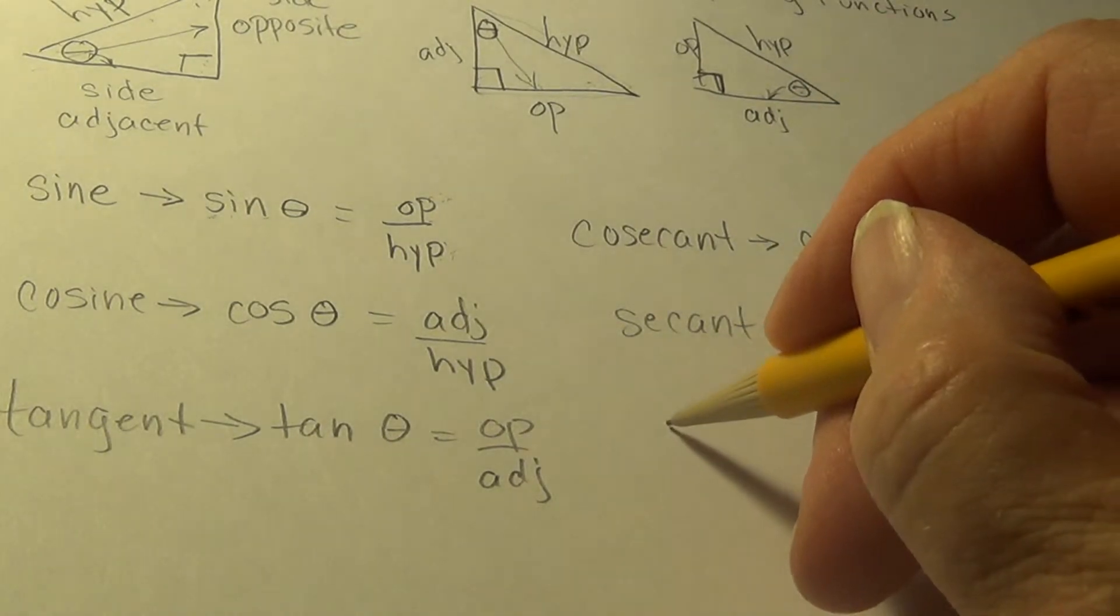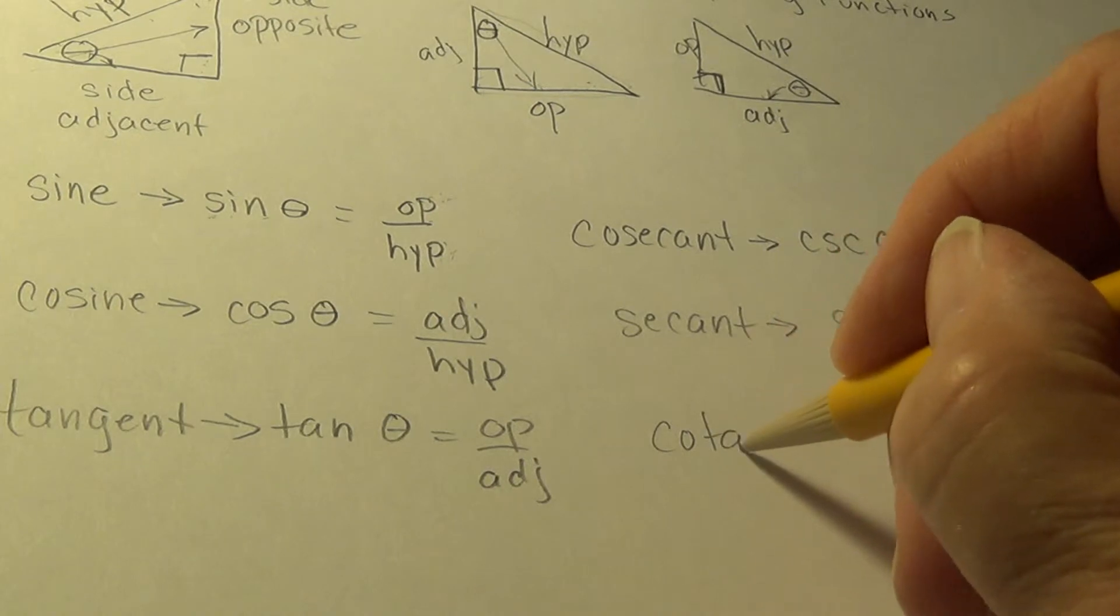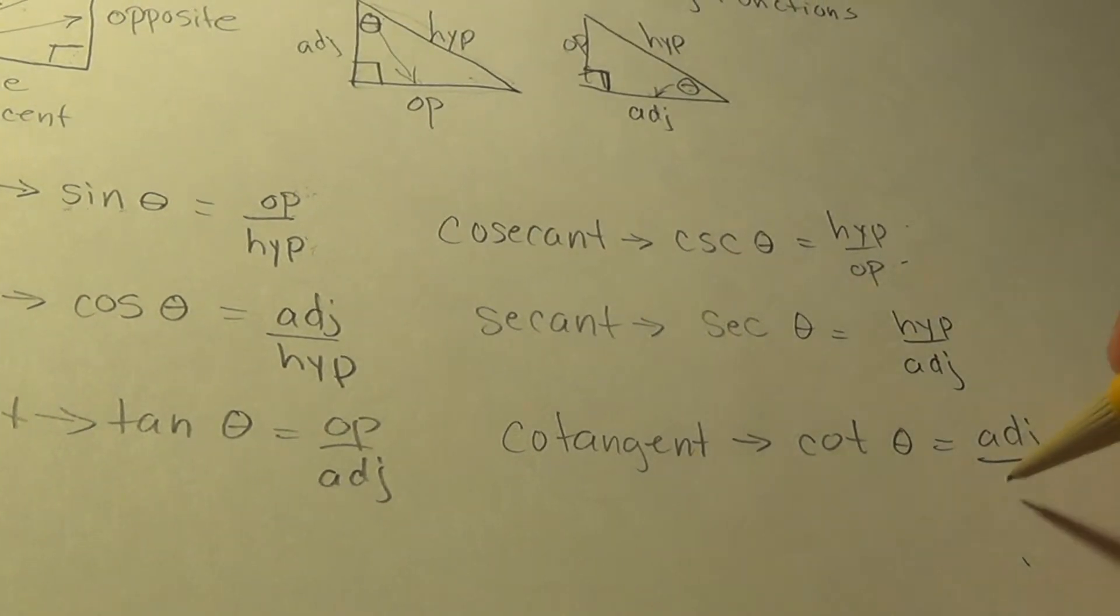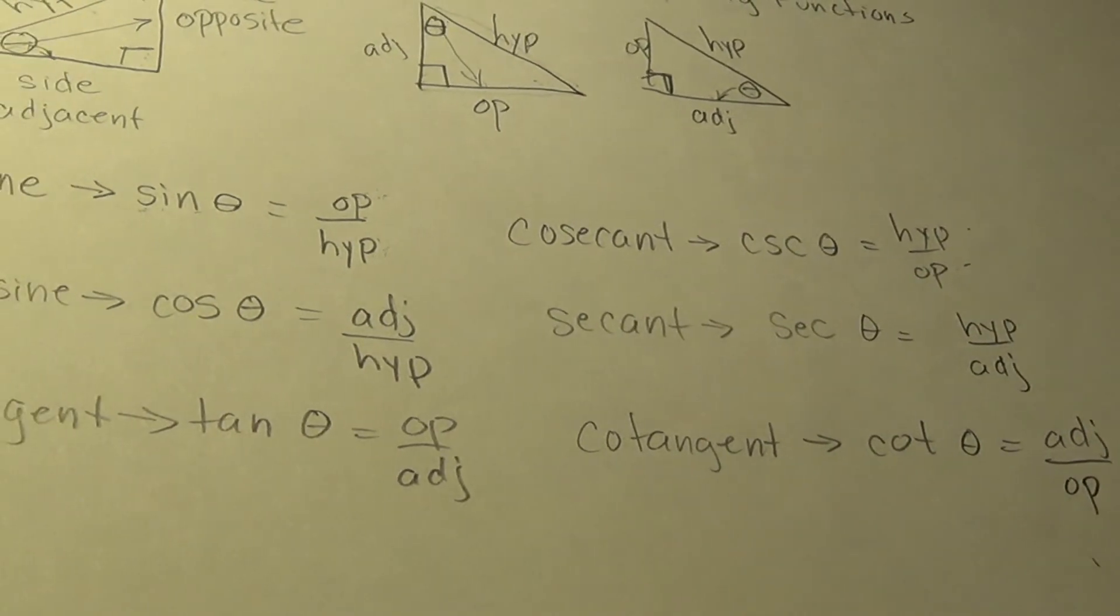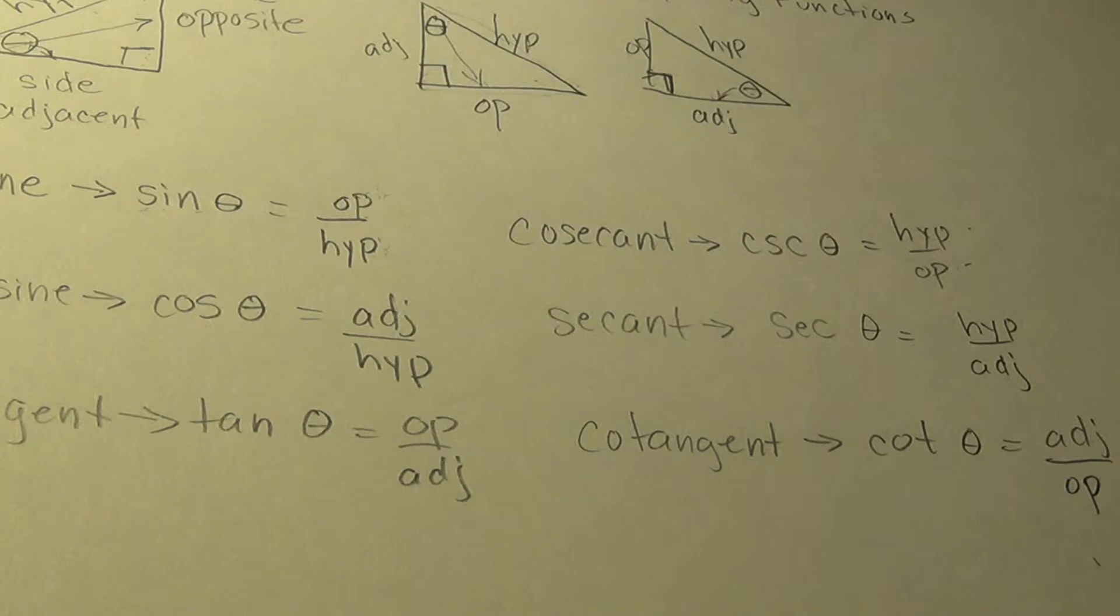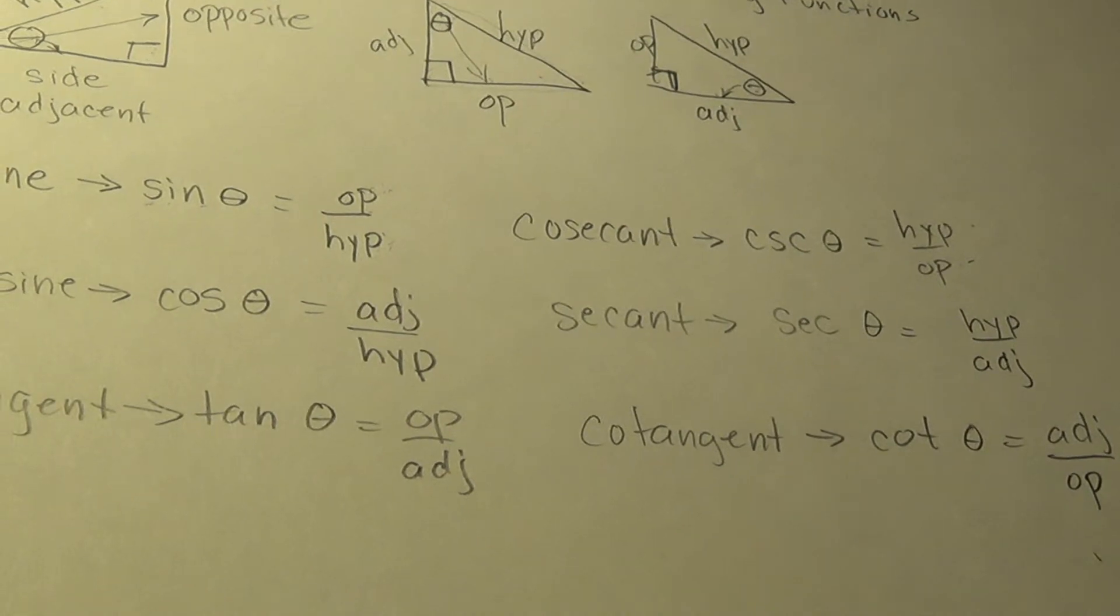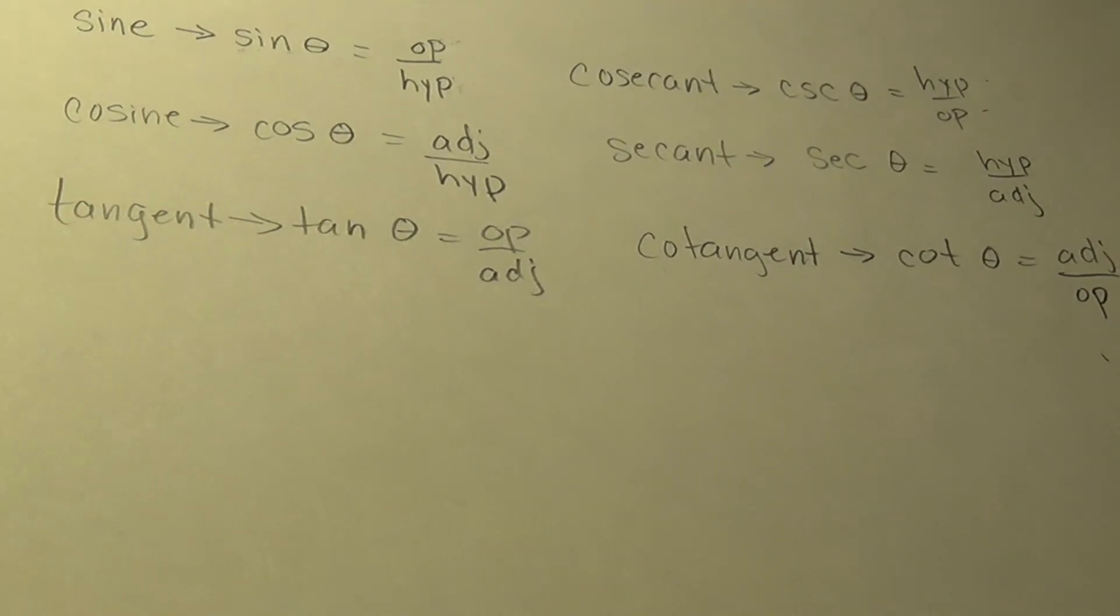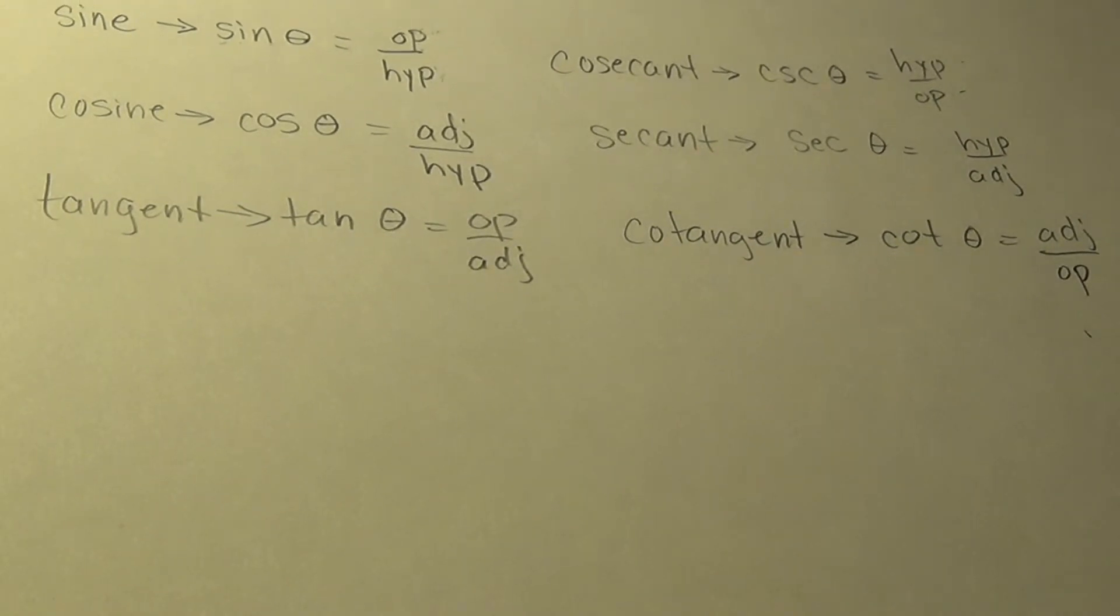Tangent's inverse is cotangent. Its abbreviation is cotangent of theta and it is adjacent over opposite. These are the six trig functions and we will be committing them to memory. For now, just get them down and get comfortable saying them and observing them. We'll get better with memorizing them. It will actually be required, and you'll be given adequate notice before I do.